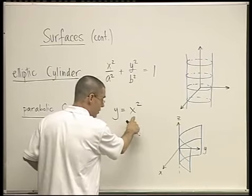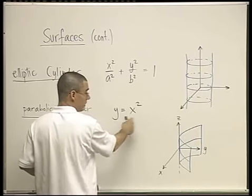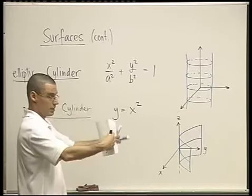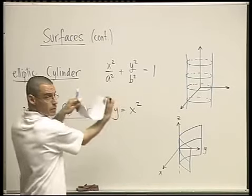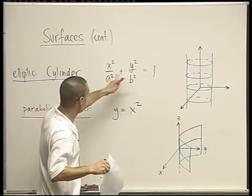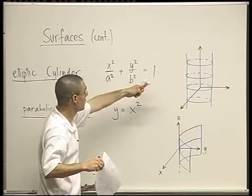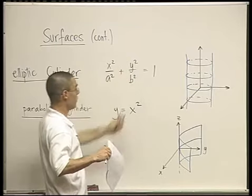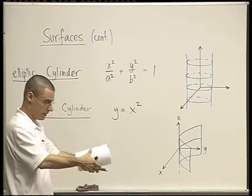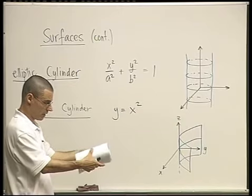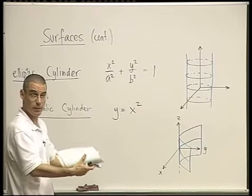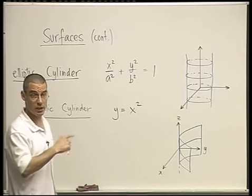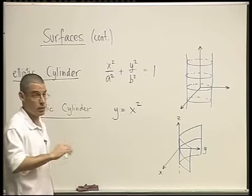So if you take instead of y equals x squared, if you take y equals z squared, instead of getting this, you'd get this. Right? Or if you take instead of x squared over a squared plus y squared over b squared equals one, if you take x squared over a squared plus z squared over b squared equals one, you'd get a cylinder that looks like this rather than like this. Right? And you can do that for all the surfaces that we've been studying in the past few clips.